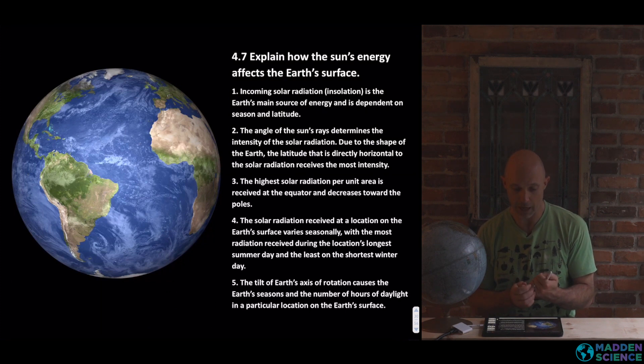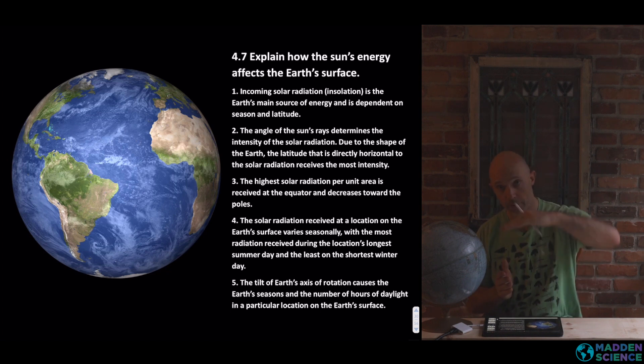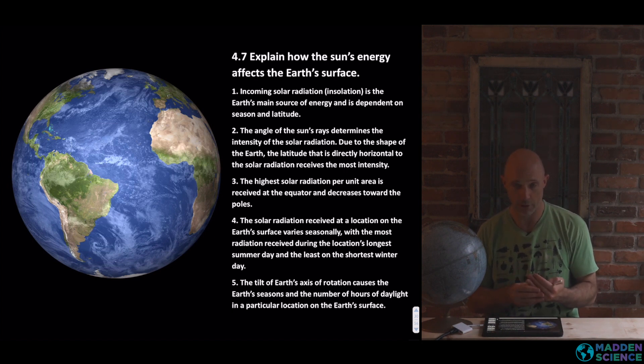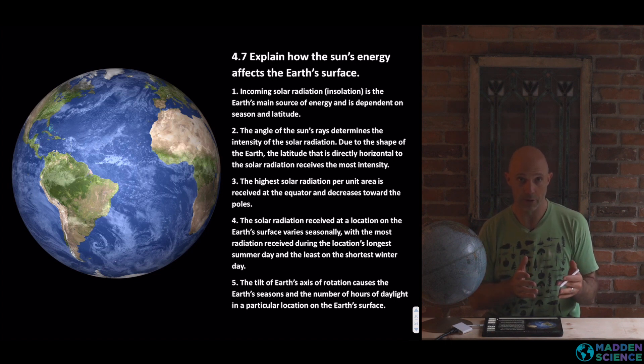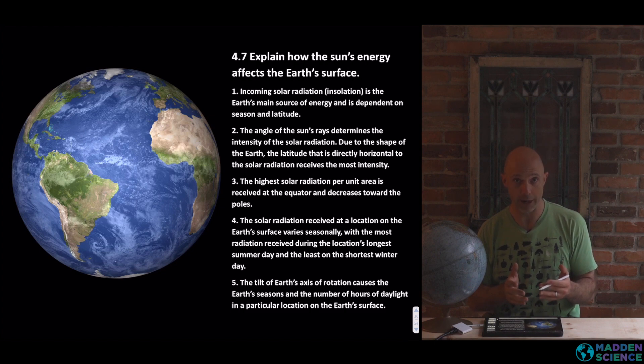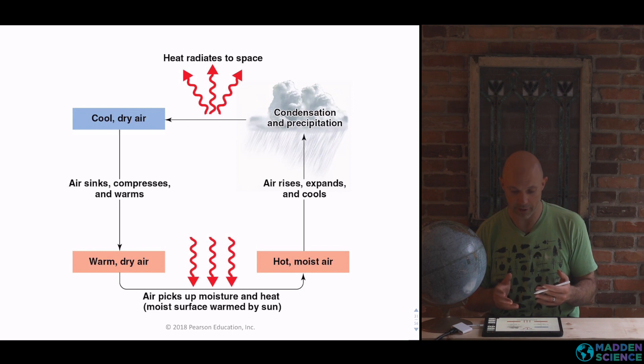This shows you again those learning objectives. Incoming solar radiation or insolation is the main source of energy. It's dependent on seasons and latitude. The angle of the sun's rays determine the intensity. Highest solar radiation per unit area is at the equator. Solar radiation received at a location on the Earth's surface varies seasonally. And the tilt is highly important and causes the Earth's season and number of daylight hours. So as the school year goes on, certainly in the first half, it's getting darker earlier and it's getting lighter later for us. See here, this is going to impact weather systems too, as at the equator, high energy is going to create higher temperatures, and that hot moist air rises, condenses, some of that heat is lost to outer space, and as it cools and dries, it circles back around.